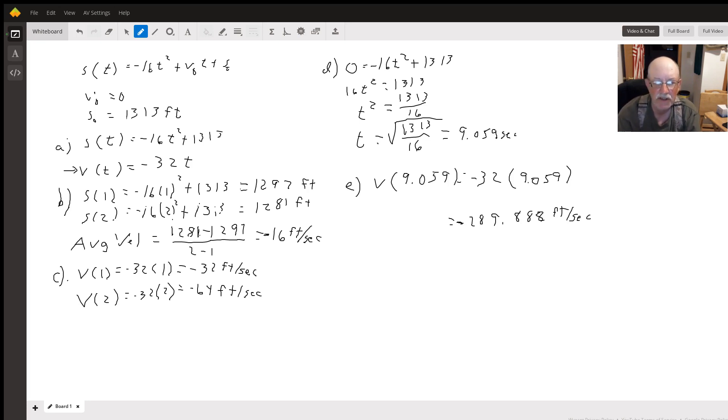So we get 0 = -16t² + 1313. Solve that for t. I added 16t² to both sides, divided both sides by 16, and then took the square root of 1313 divided by 16, and that came out to be 9.059 seconds. So the coin hits the ground in 9.059 seconds.